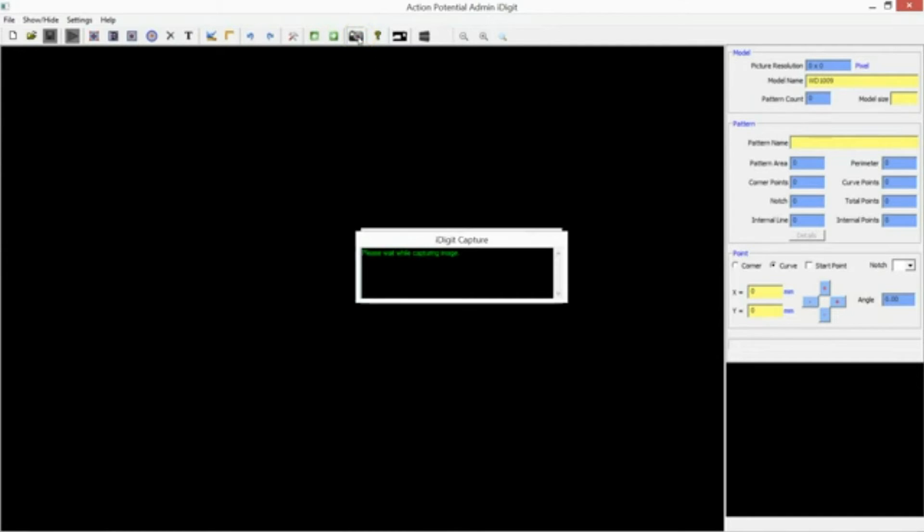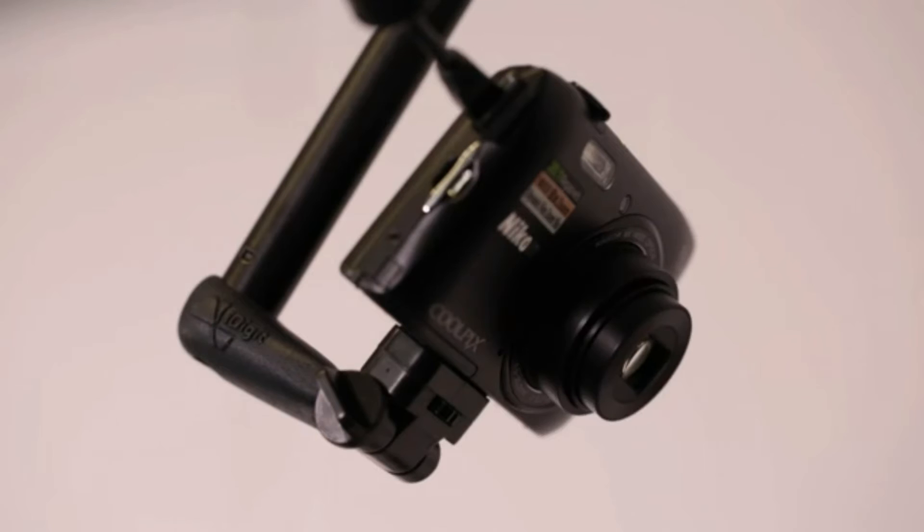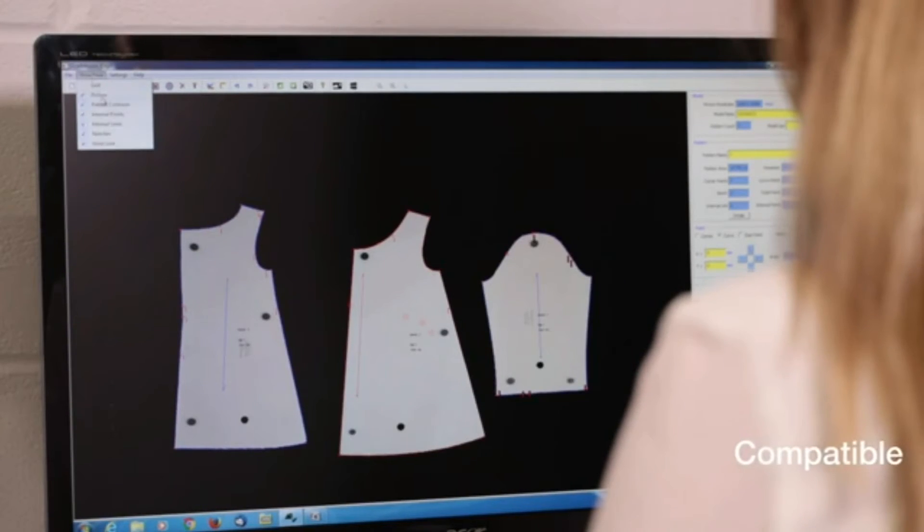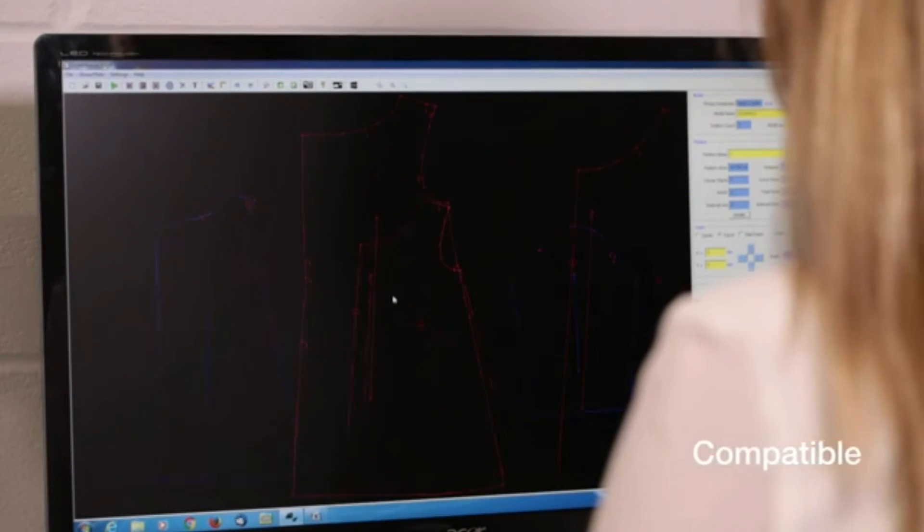Digitising is made as easy as a single click, then iDigit takes a picture of the patterns automatically and your patterns are ready in a few seconds. It exports patterns as DXF files, which can be used by almost any CAD programme.